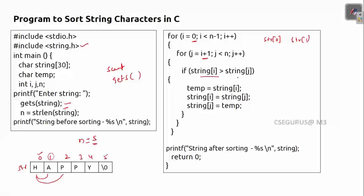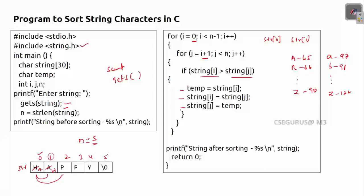So str[i] greater than str[j] means str[0] which is h is greater than str[1] which is a. Since characters are compared by ASCII value, h is greater than a, so we swap. The three lines perform a standard character swap. After the swap, a comes to position zero and h moves to position one. Then j increments to the next value.